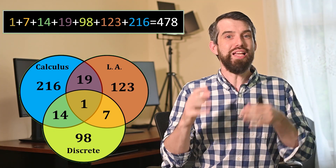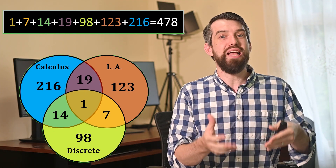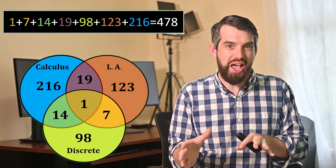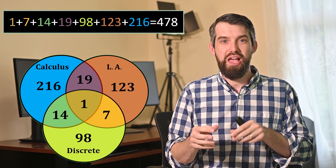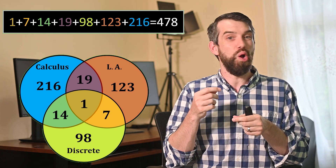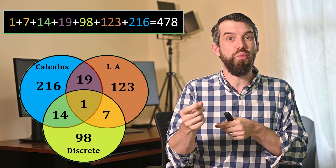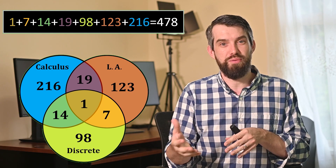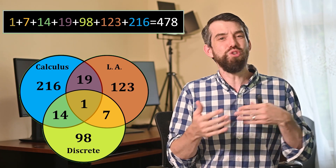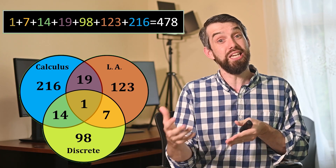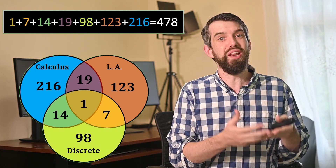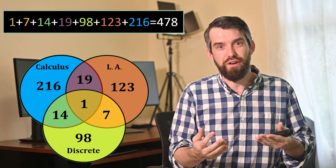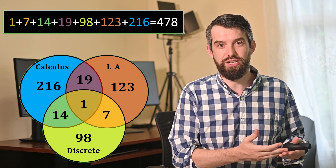So that's one way to answer these kinds of triple intersection arguments — you write down the Venn diagram and figure out what numbers go in each possible region. I also want to show you a more formulaic way to do it. We're going to come up with a generic formula for the triple intersection.